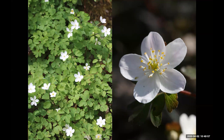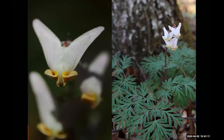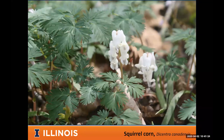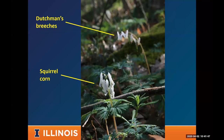One of my favorites is Dutchman's breeches — a beautiful plant in full flower with little white pants-shaped flowers hanging on a line, which is how it gets its name. A close cousin is squirrel corn, and many people confuse the two. The difference is Dutchman's breeches has the pants shape, while squirrel corn looks like a little kernel of corn or a small heart. When not flowering they're very hard to tell apart, but squirrel corn blooms a couple weeks later and they often grow right next to each other.